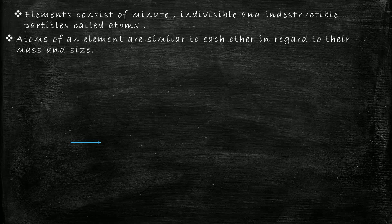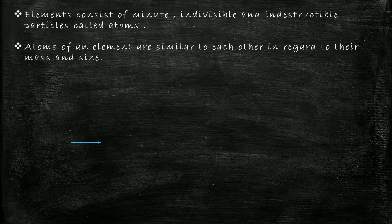Let's understand the second point. According to the second point, atoms of an element are similar to each other in regard to their mass and size. He meant to say that every atom in an element is of the same size and their mass is also the same. Suppose if you consider a carbon element, he said that every atom in a carbon element has the same size and the same mass.